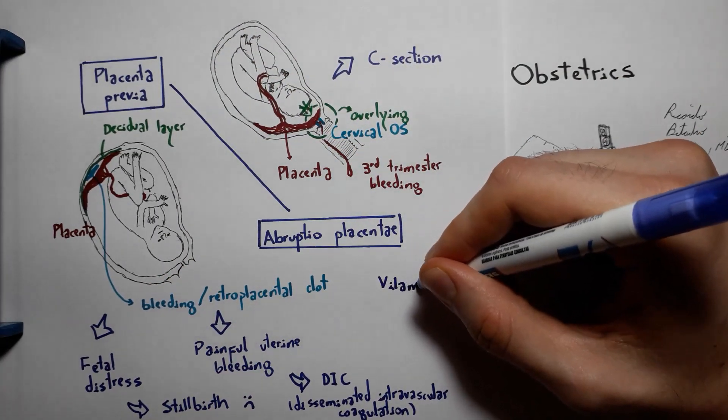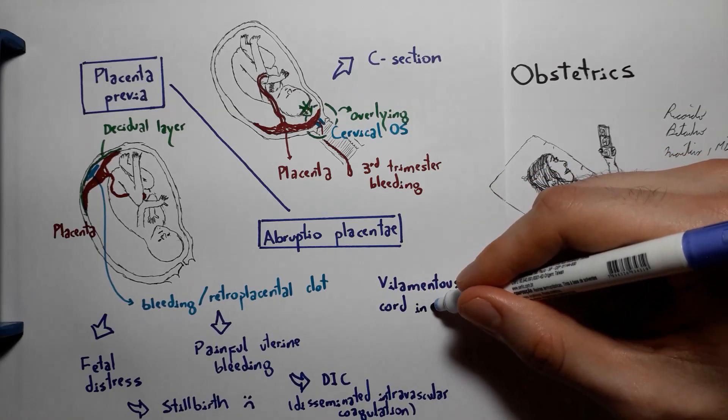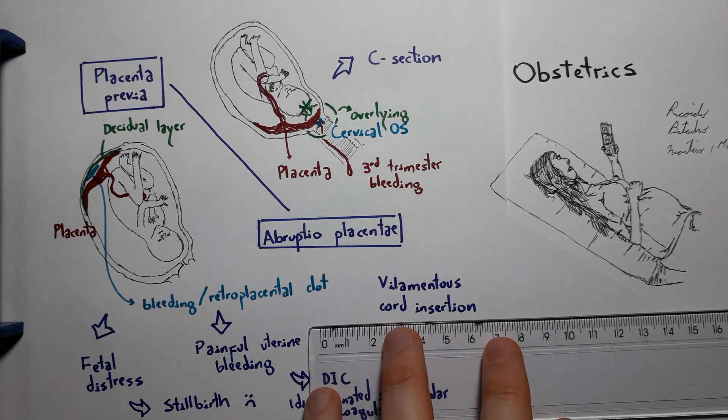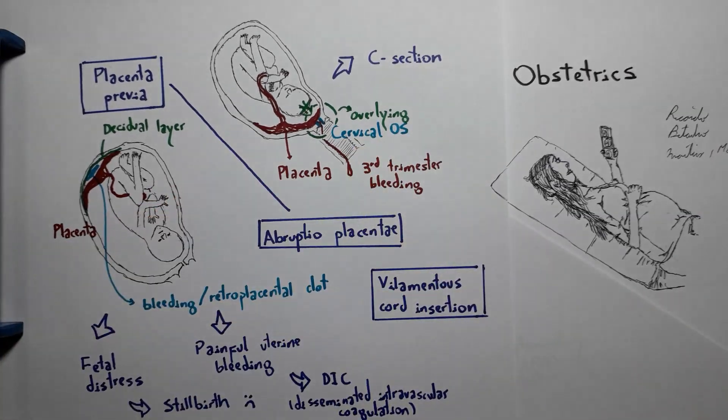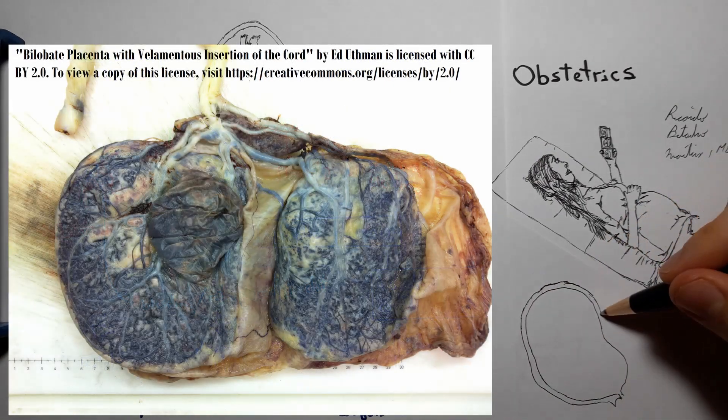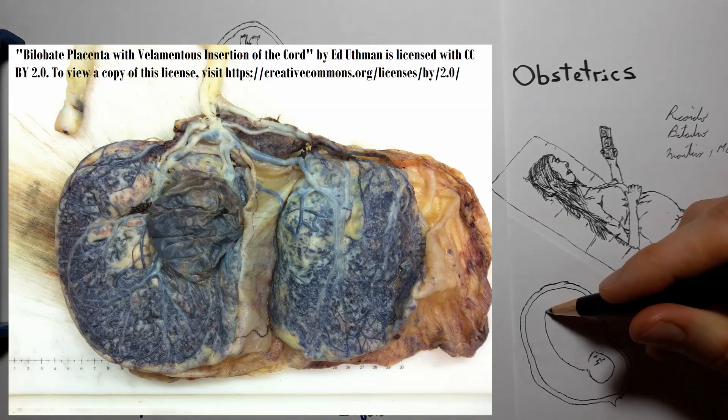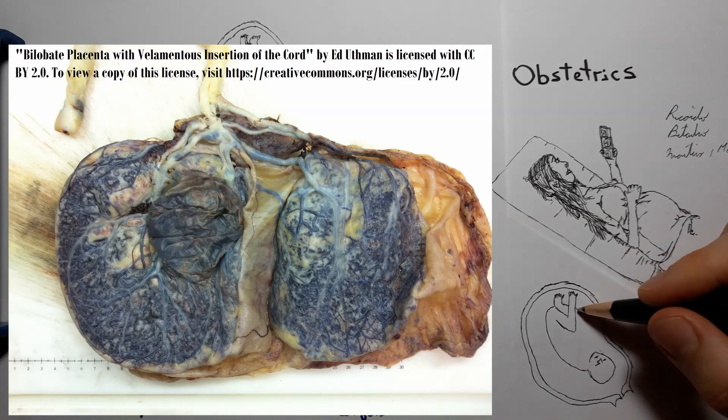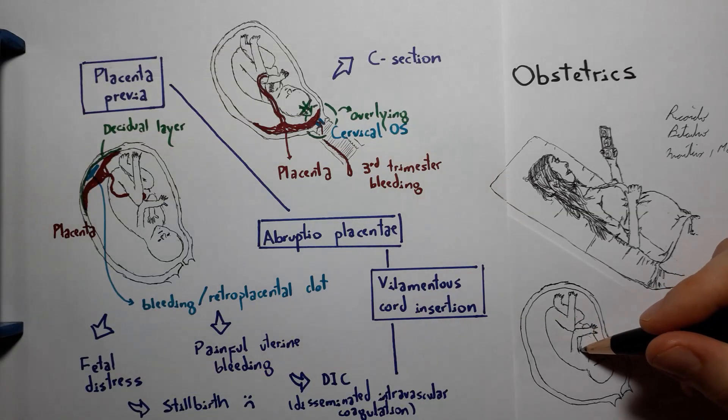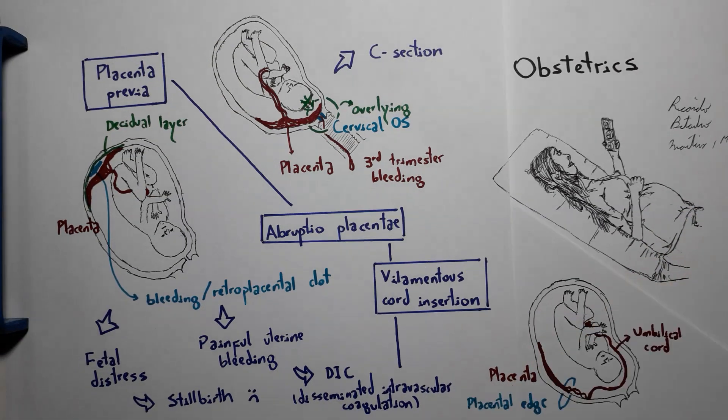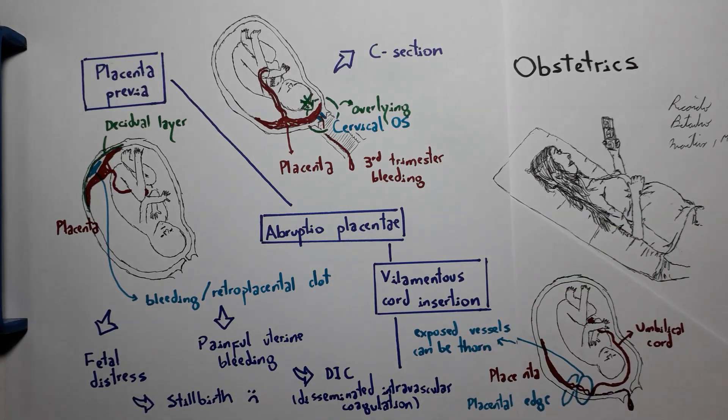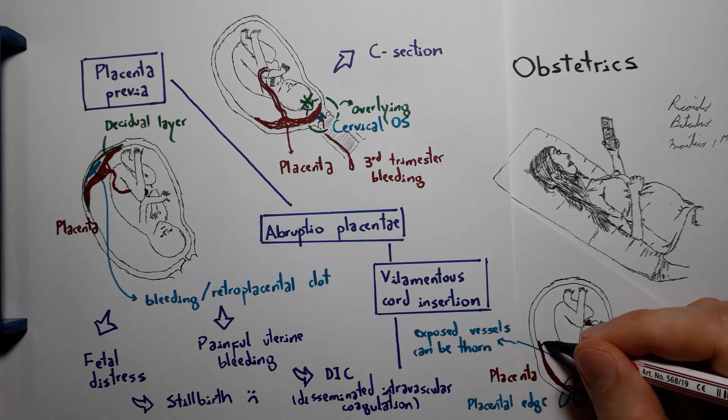Other less common placental abnormalities include, for example, villamentous insertion of the umbilical cord, in which the umbilical cord inserts beyond the placental edge, causing the umbilical vessels to have to travel unprotected to the placenta. This makes them particularly vulnerable to being torn and causing a hemorrhage.